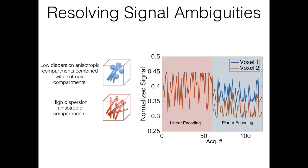We're sensitive to many different features of tissue microstructure, but it's hard to tease apart changes because different tissue alterations can produce the same measured effect. For example, two different voxels can appear similar with linear encoding — one with low-dispersion anisotropic compartments combined with isotropic compartments, another with highly dispersed anisotropic compartments. With planar encoding, we can start to disambiguate between them.